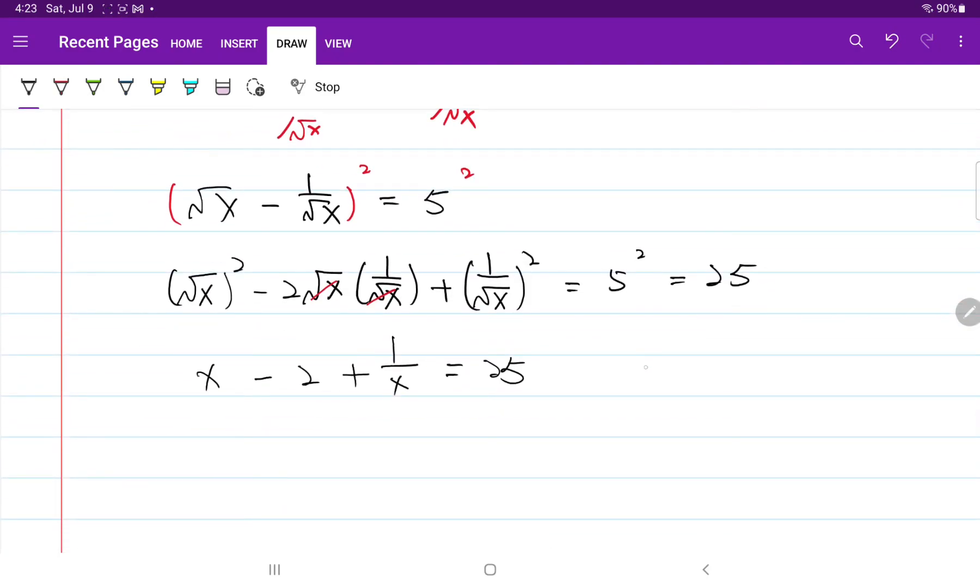Moving minus 2 to the right-hand side, we have x plus 1 over x is equal to 27.